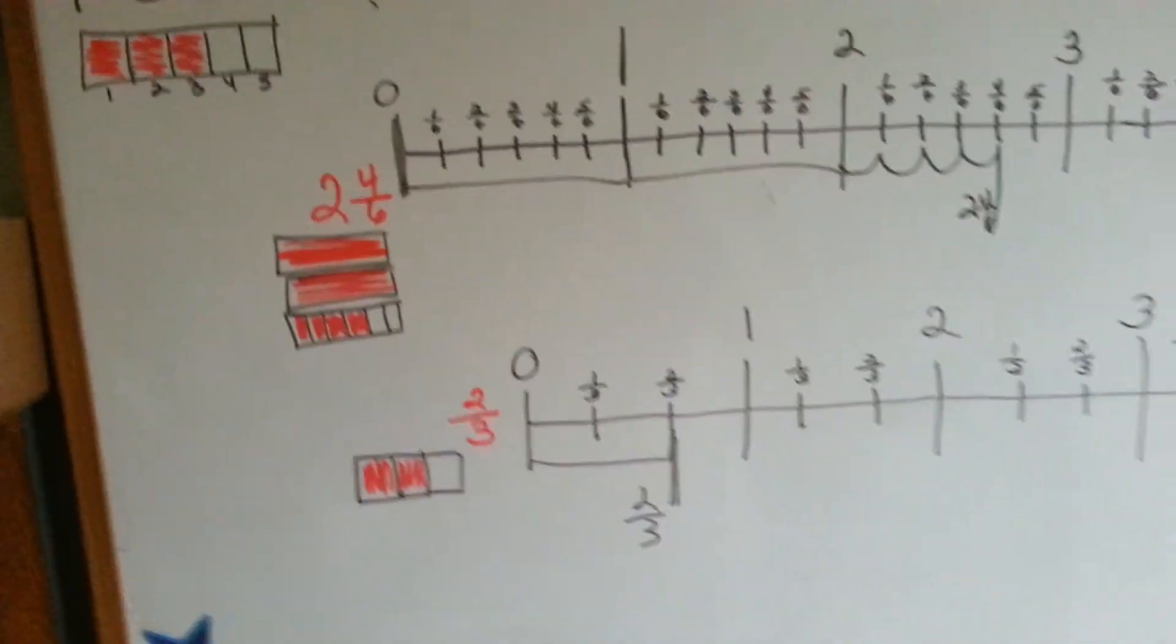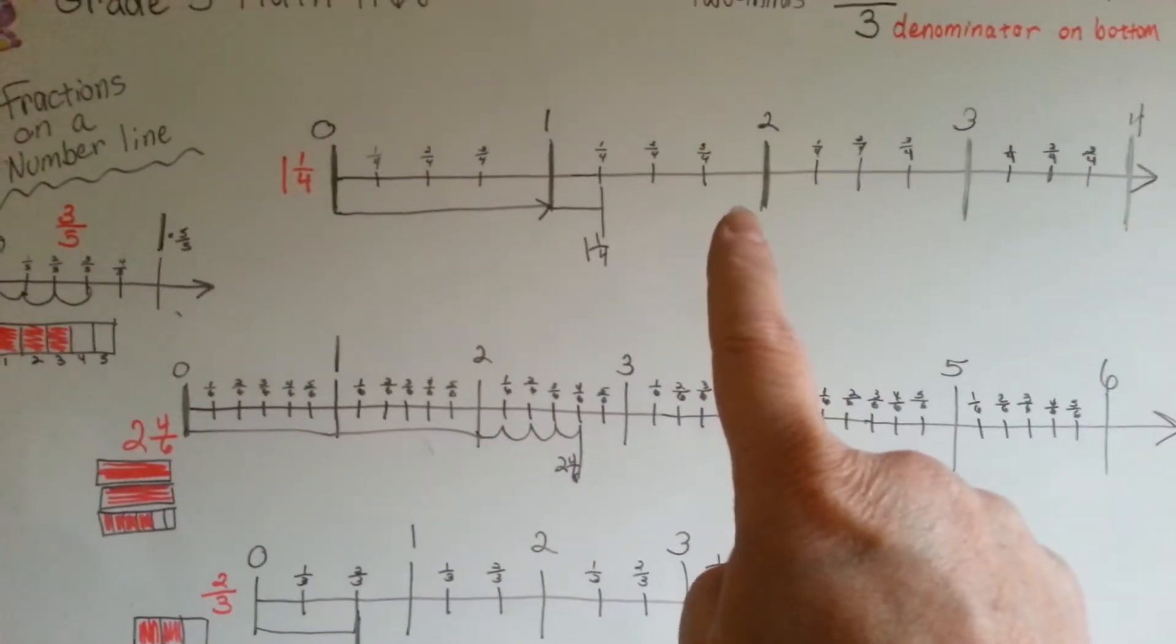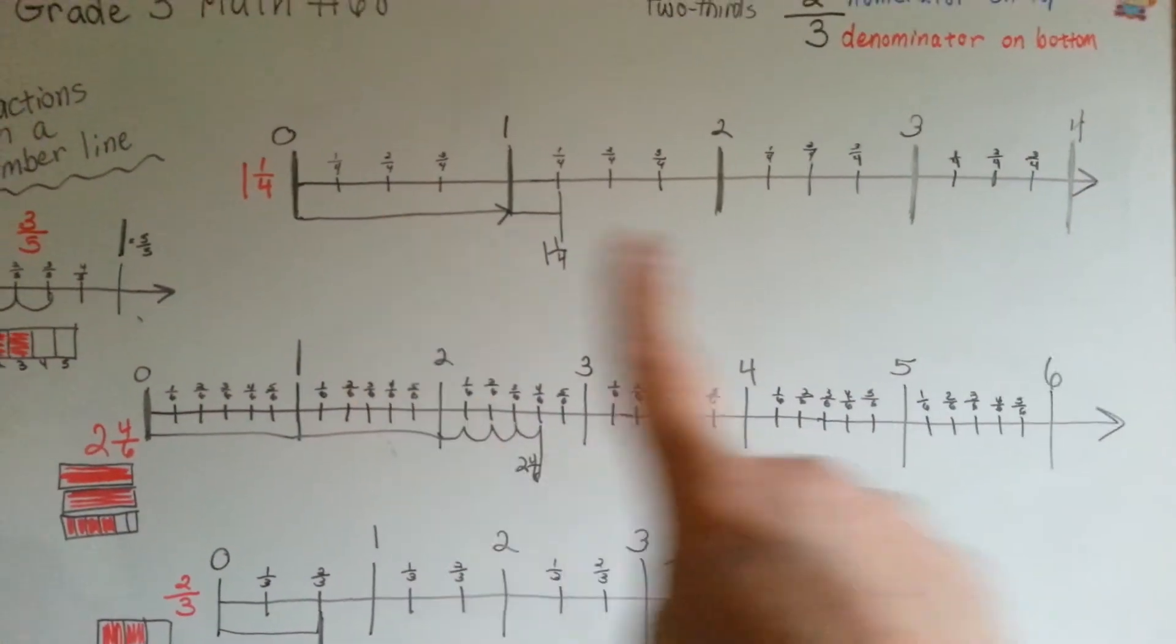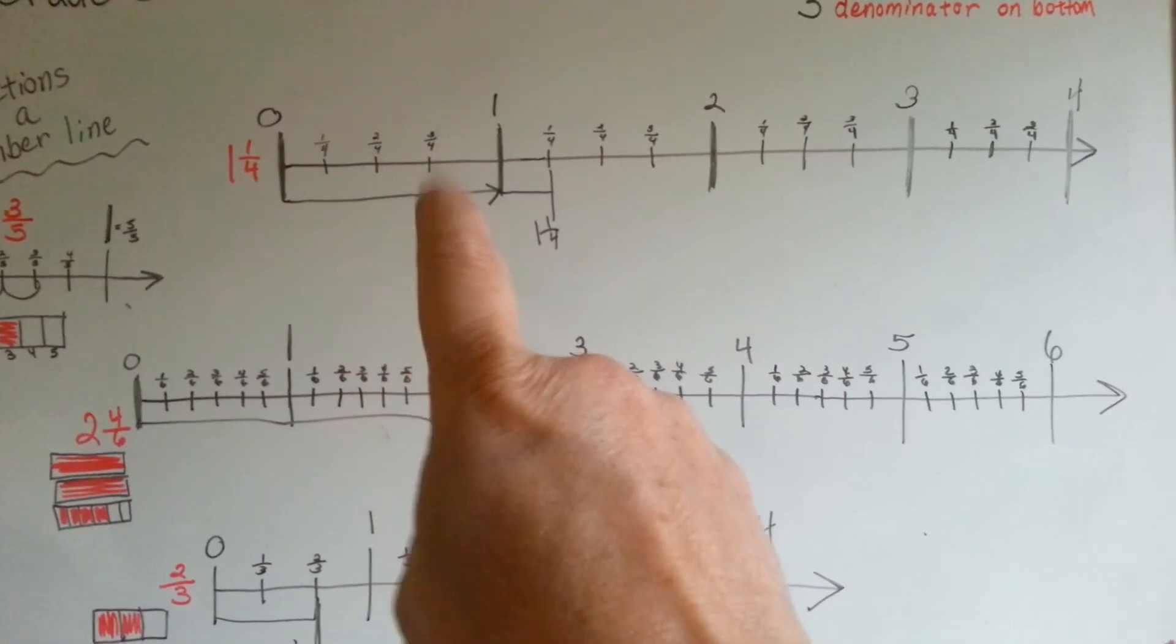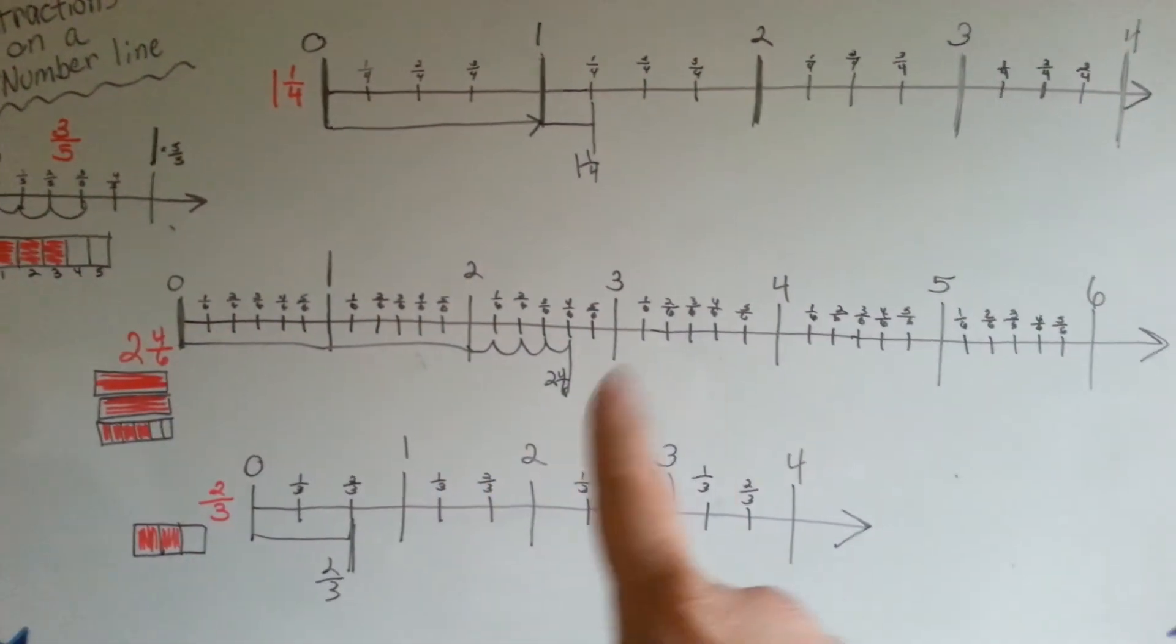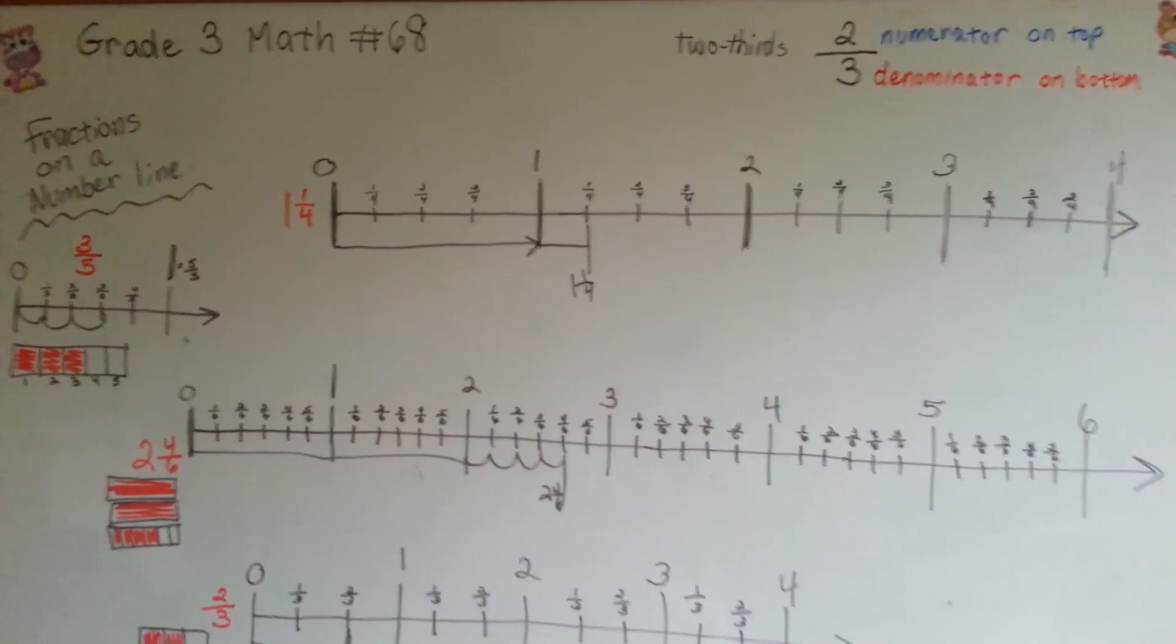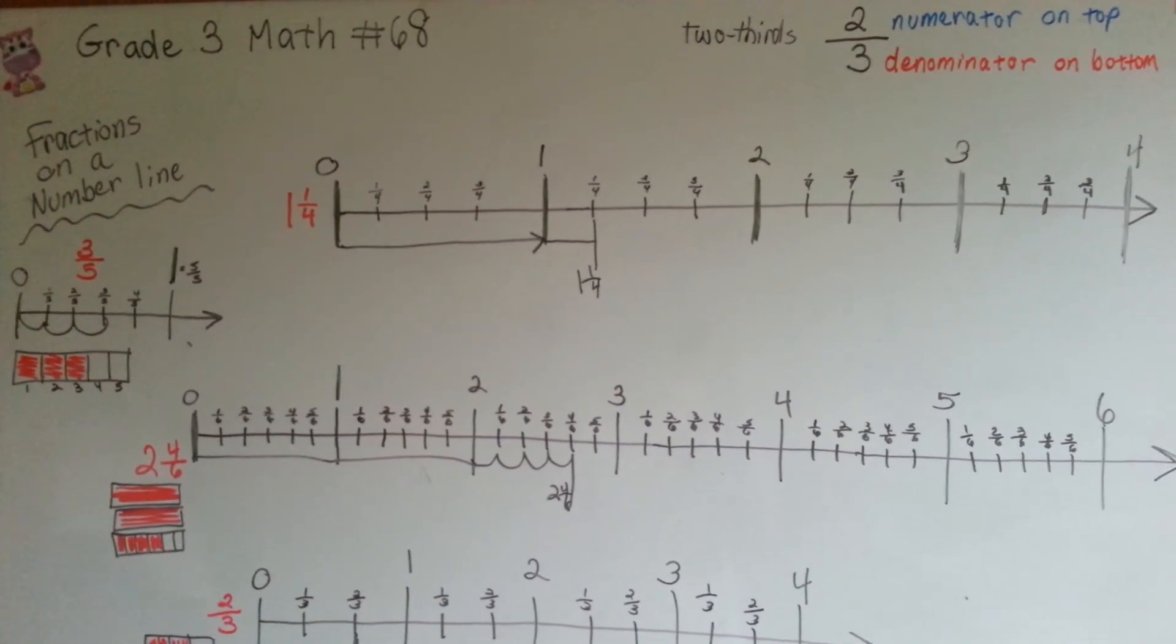So those are fractions on a number line. What you do is, you split the big numbers, you mark your big numbers in, and then you split your big numbers into little pieces that are equal to each other, equal parts. Fractions on a number line. That wasn't hard, was it? Nah. Keep up the good work.